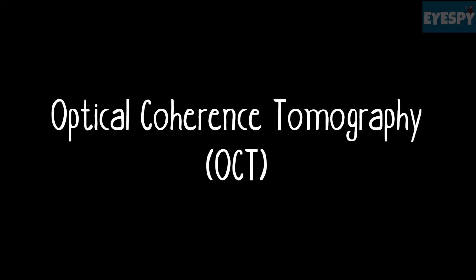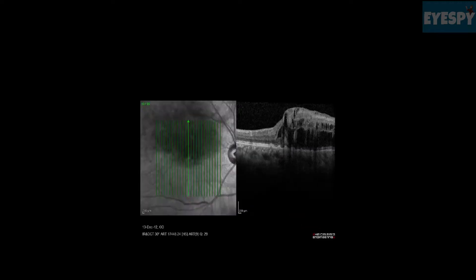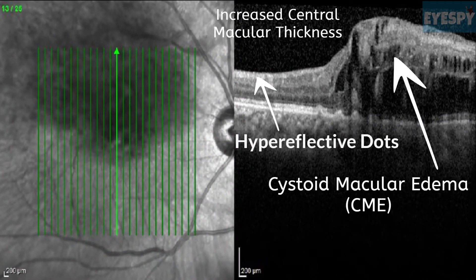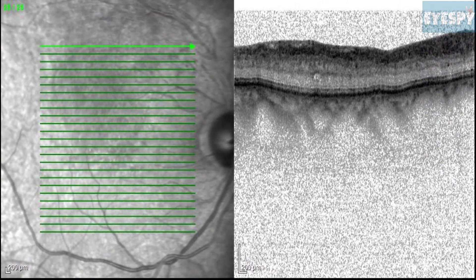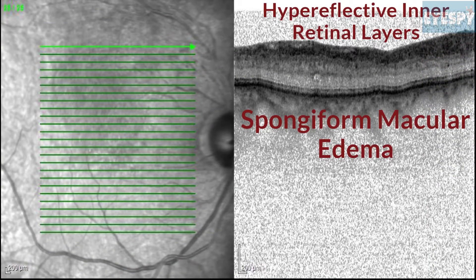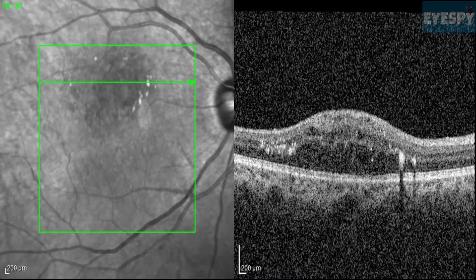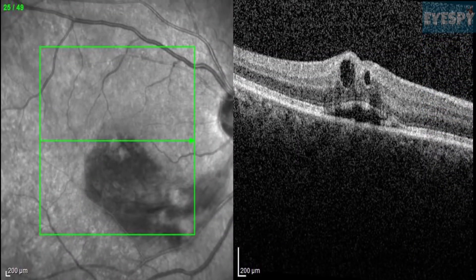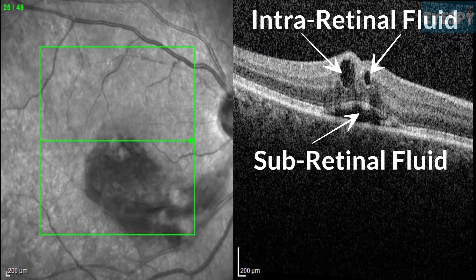On OCT imaging, BRVO usually shows increased central macular thickness, cystoid macular edema, and hyperreflective dots. The inner layers of the retina are hyperreflective, and there may be diffuse thickening of the retina due to edema. Hard exudates are highly hyperreflective and cause intense back shadowing. There may be accumulation of sub- and intraretinal fluid.